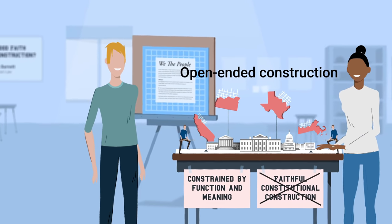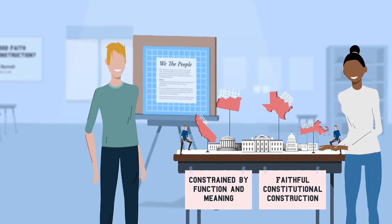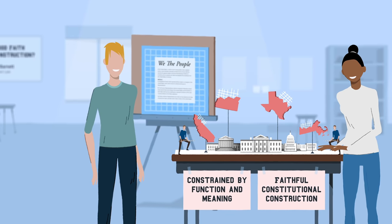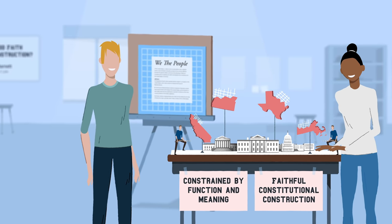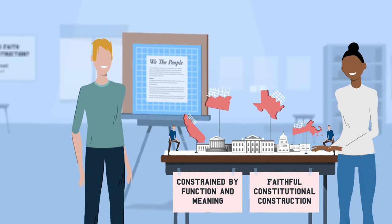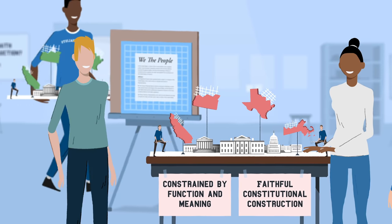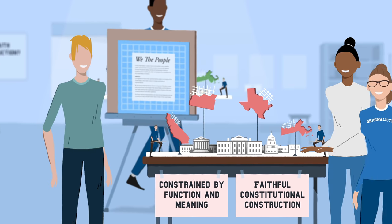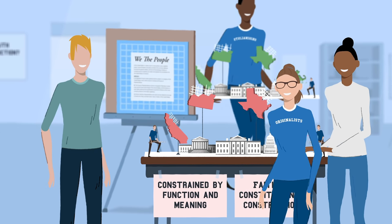Constitutional construction should be done in a constrained way, constrained by the original purpose or function of a text, not just by its original meaning.